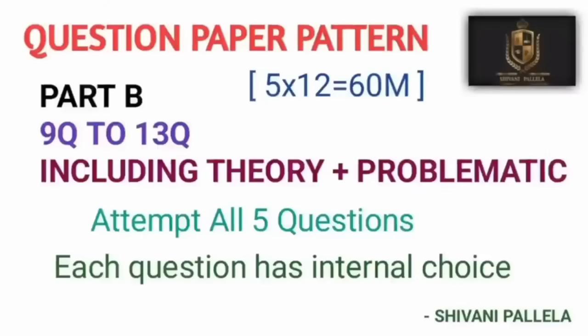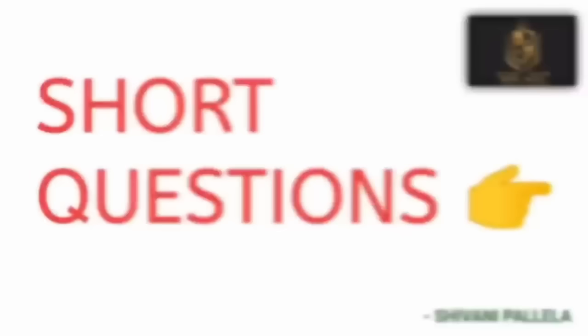In Part B, questions nine to thirteen will include both theory and problematic questions. You need to attempt five questions, and each question will have an internal choice. This is the complete question paper pattern you need to understand before starting your preparation.